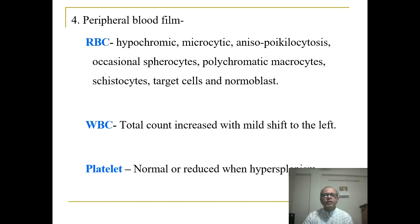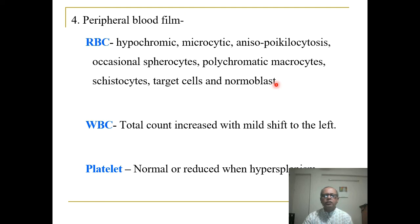In the peripheral blood film, we see features of red blood cell destruction: hypochromia, microcytosis, and anisopoikilocytosis. Occasionally there are spherocytes, polychromatic microcytes, schistocytes (fragmented red blood cells), target cells, and normoblasts (nucleated RBCs). The white cell total count is increased with a mild shift to the left. Platelets are normal or reduced due to hypersplenism and splenic sequestration.